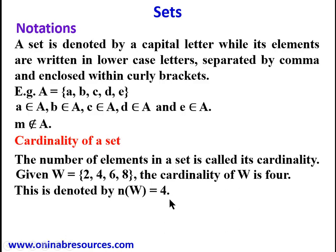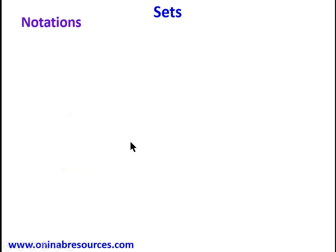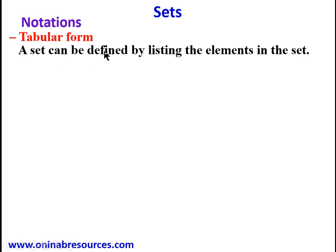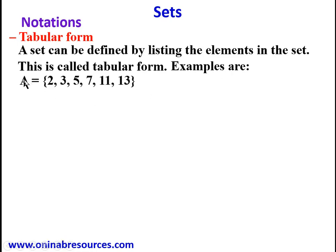So we go to the next item. We look at tabular form, that's representation of sets. In tabular form, a set can be defined by listing the elements in the set. This is called tabular form. So we look at some examples: We have set A = {2, 3, 5, 7, 11, 13}, set B = {m, a, t, h, s}.